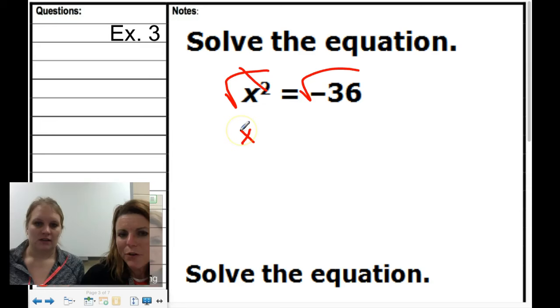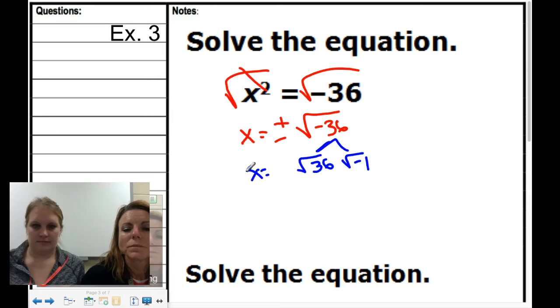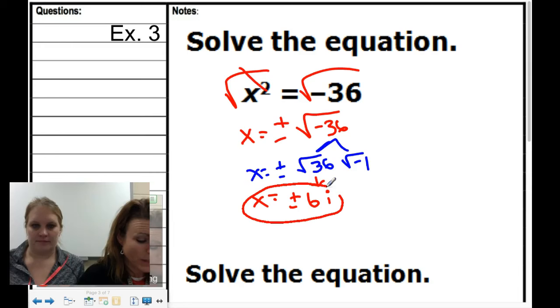We can separate that up into two parts: the square root of 36 and negative 1, plus or minus. We know that the square root of 36 is equal to 6. Bring the plus or minus down, and that's just i. Your answer is plus or minus 6i. We'll circle our answer.